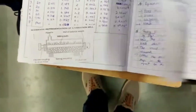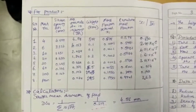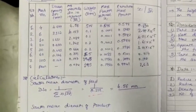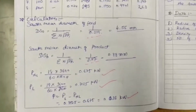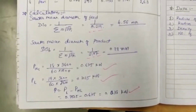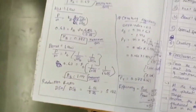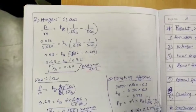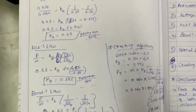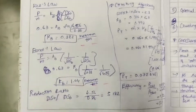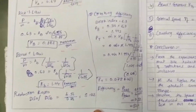We have the values for power and mass flow rate, which we apply in Rittinger's law to calculate the Rittinger's constant, Bond's law constant, and Kick's constant. We also find the critical speed of the ball mill with the help of the diameter of the mill and the balls, which we calculated earlier.